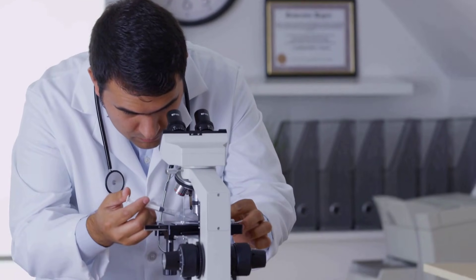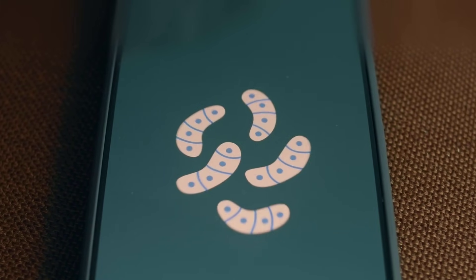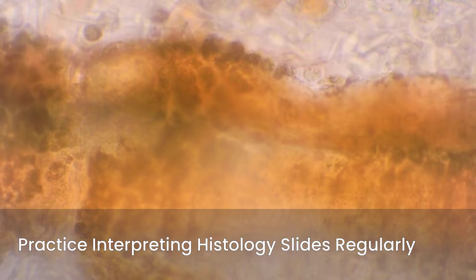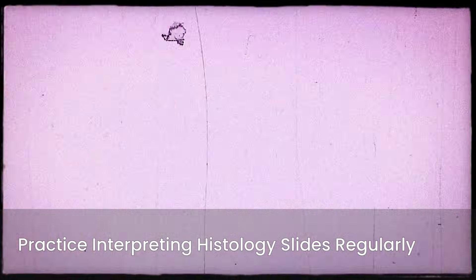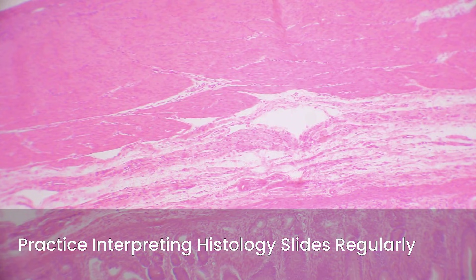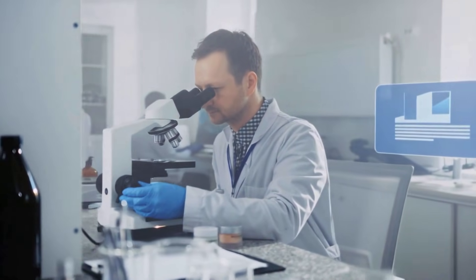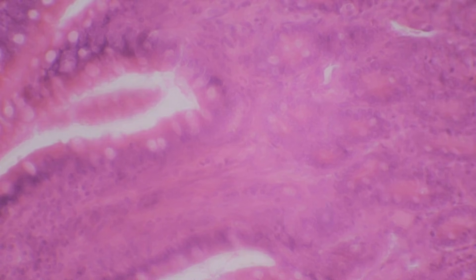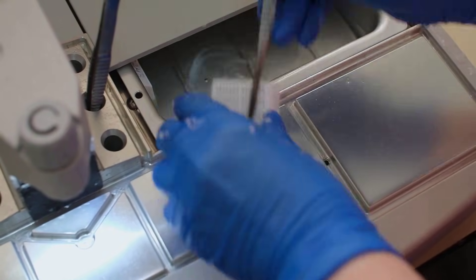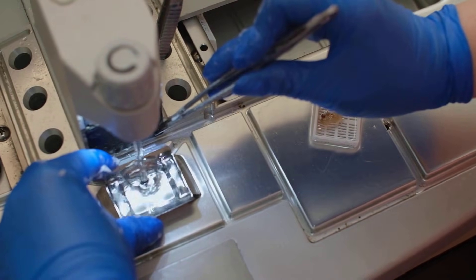Now let's talk about how all this translates to the USMLE Step 1 exam. A significant portion of histology questions will require you to identify tissues and cells under a microscope, so visual recognition is paramount. Practice interpreting histology slides regularly using atlases, online resources, and question banks that include images — the more you see, the better you'll become at rapid identification. Also focus on distinguishing features and special stains, such as those that highlight elastic fibers or reticular fibers, as these details are often tested.